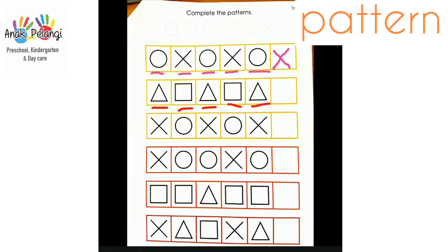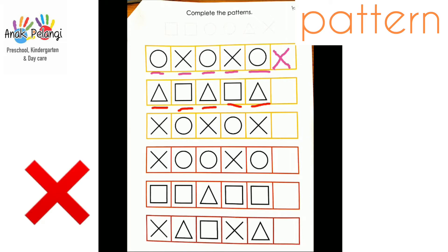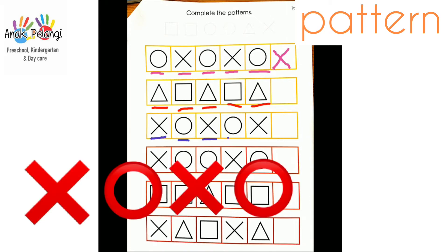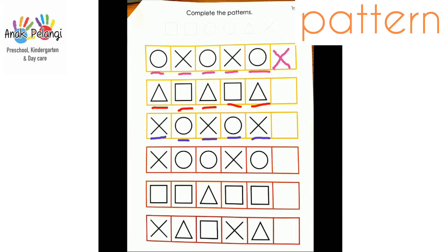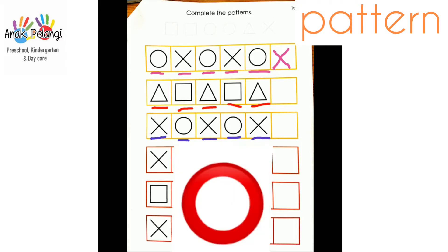Listen carefully. Cross, circle, cross, circle, cross. What pattern comes next — is it a cross again or a circle? Cross, circle, cross, circle, cross — circle. The next pattern is circle.